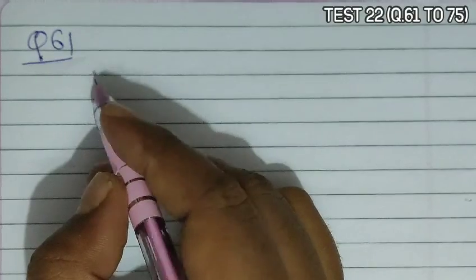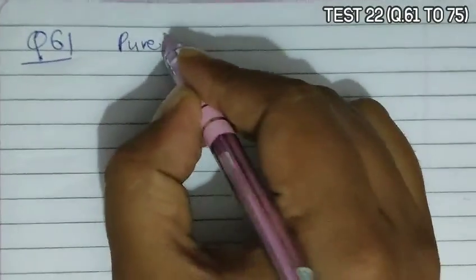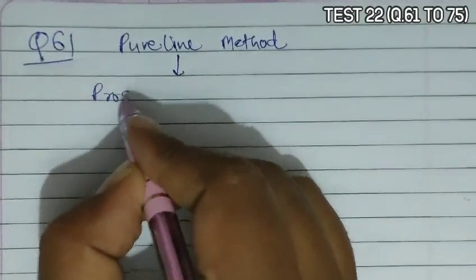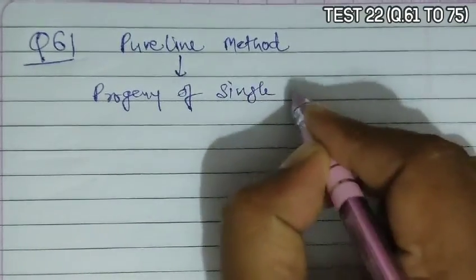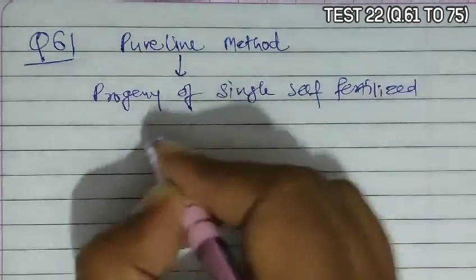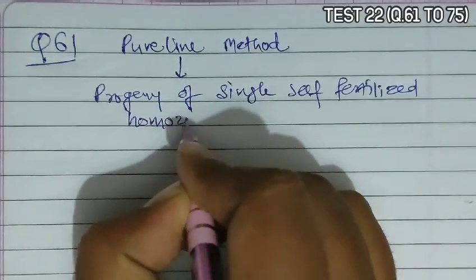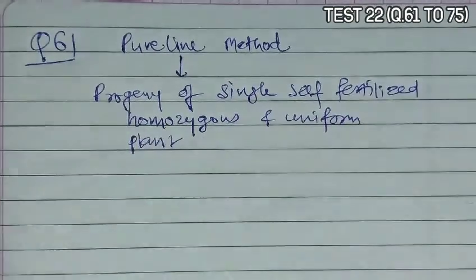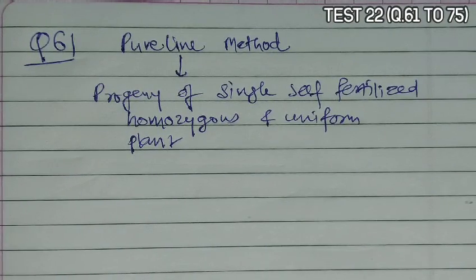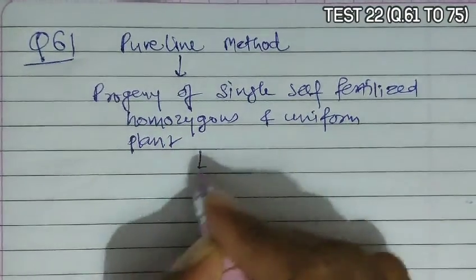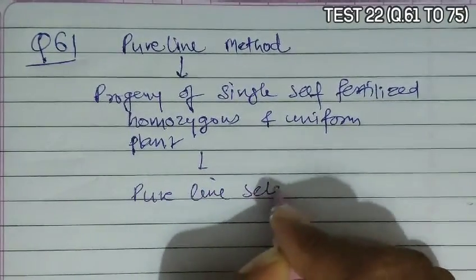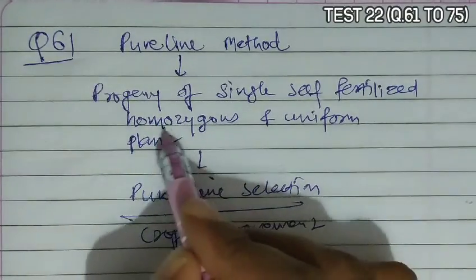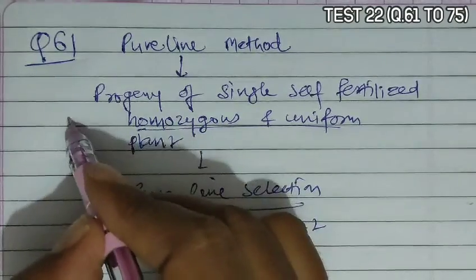Question 61 asks that varieties developed by pure line method are. When we talk about pure line, it indicates the progeny of a single self-fertilized homozygous and uniform plant. The progeny of a single self-fertilized homozygous and uniform plant is called a pure line selection. This is a method of crop improvement, so homozygous and uniform varieties are developed by pure line method, so B is the correct answer.